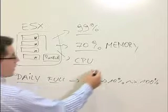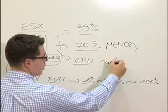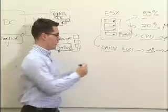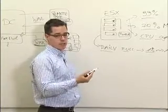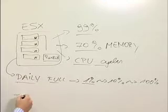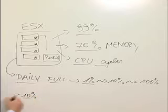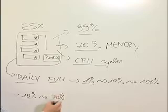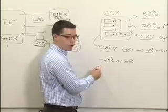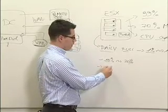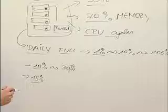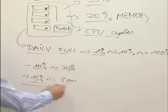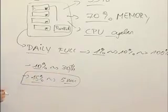Instead of running a traditional NetBackup client at ten percent CPU for half an hour, with PureDisk we will run at fifteen percent for maybe five minutes. So the overall CPU utilization is less.